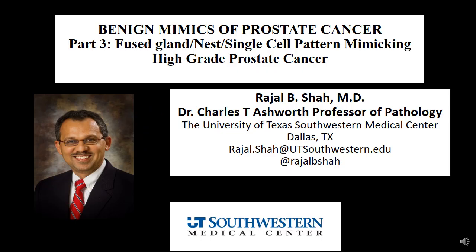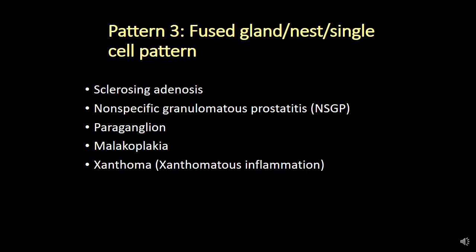This case brings up an important topic of benign mimics of prostate cancer which present with fused gland, nest, or single cell type of pattern mimicking high grade prostate cancer. This is my last presentation on the series of benign mimics of prostate cancer. In this particular topic there are five important conditions: sclerosing adenosis, nonspecific granulomatous prostatitis, paraganglion, malacoplechia, and xanthoma or xanthomatous inflammation.